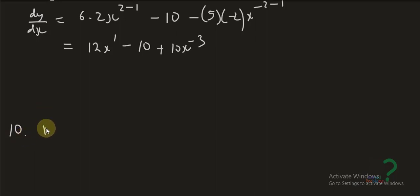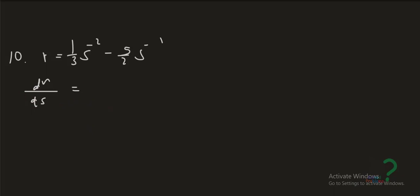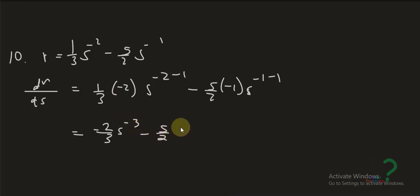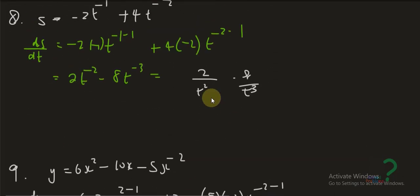Next example: r equals (1/3)s to the negative 2 minus (5/2)s to the negative 1. So dr over ds equals (1/3) times negative 2 times s to the negative 3, minus (5/2) times negative 1 times s to the negative 2. That gives negative (2/3)s to the negative 3 minus (5/2)s to the negative 2. That concludes the power rule examples.